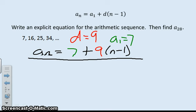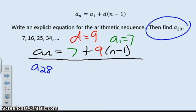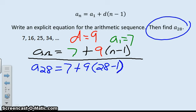But I do have to find the 28th term. So I'm going to do that now. So a sub 28 equals seven plus nine times 28 minus one. I got 250. So the 28th term of that sequence is 250. And I think that definitely you would prefer to do this instead of listing 28 terms of that sequence.